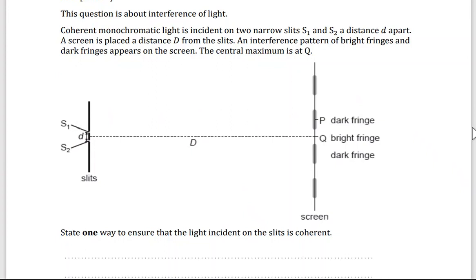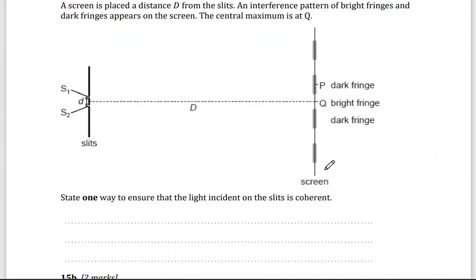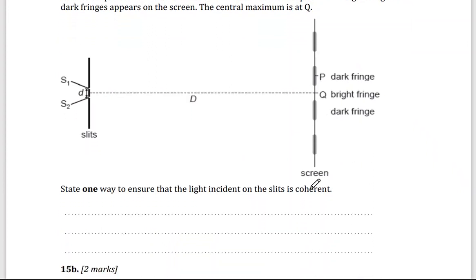The distance, capital D, they interfere, will have a bright fringe, dark fringe, bright, dark, and so on. The question is, state one way to ensure that the light incident on the slit is coherent. We use laser light with one color, with one single color. So here we use a single laser light.